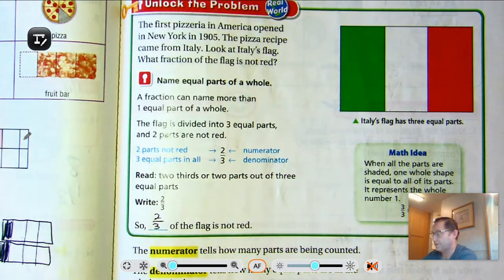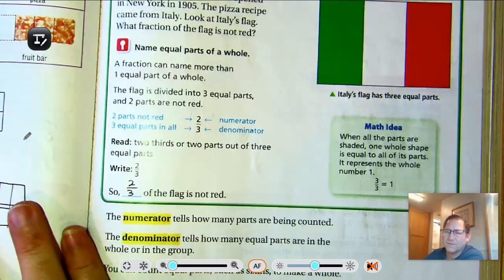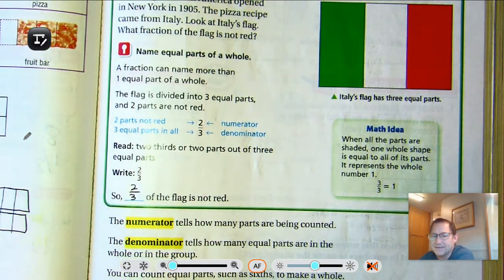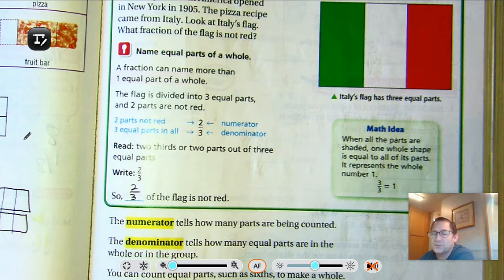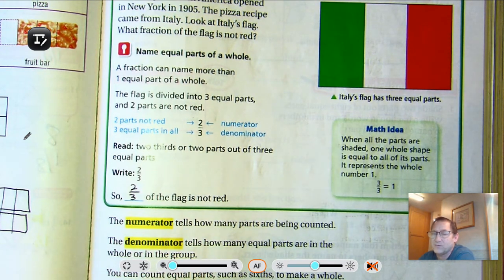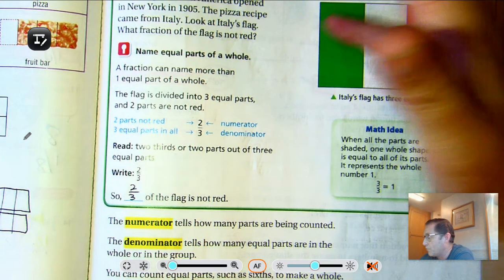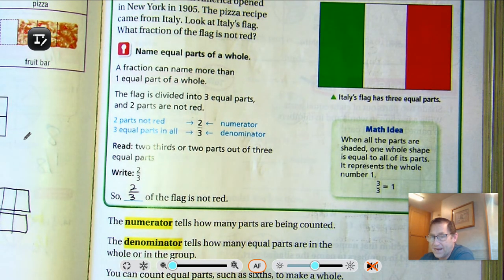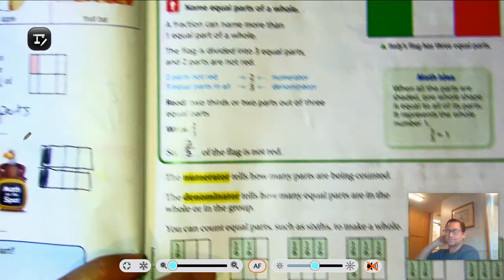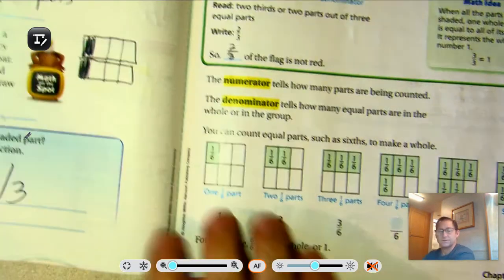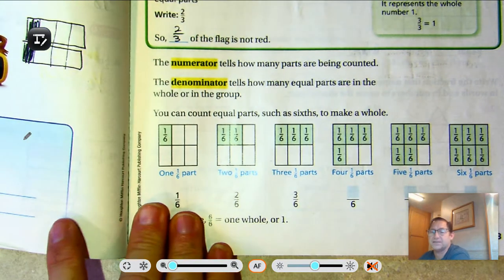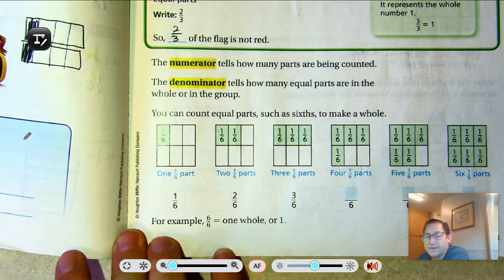So two-thirds of the flag is not red. Now, general math idea: when all the parts are shaded, one whole shape is equal to all of its parts — it represents the whole number one. If each part of this was red, then the whole thing, three out of three, would be red. A couple of key terms in a fraction that we need to know, and we need to be able to keep them straight.